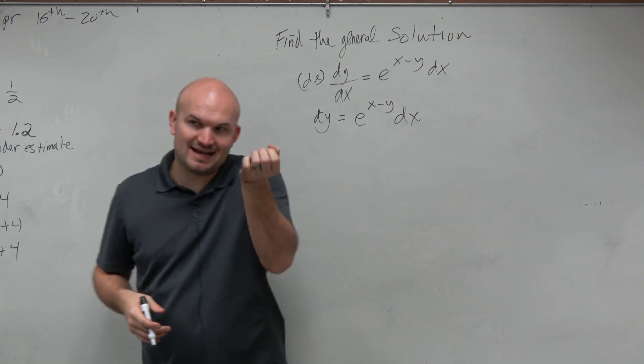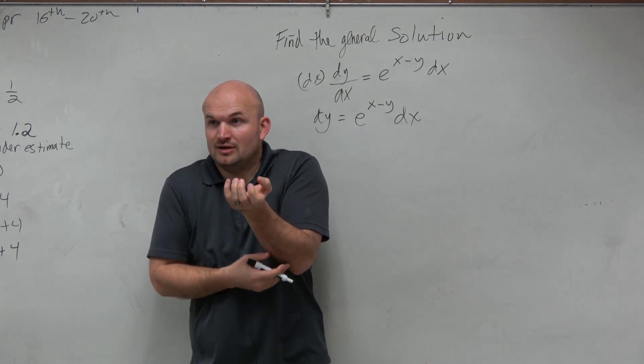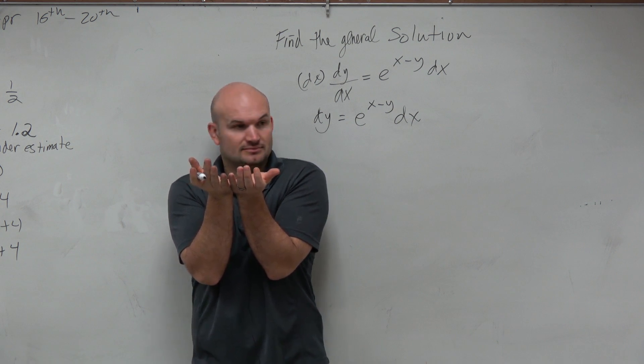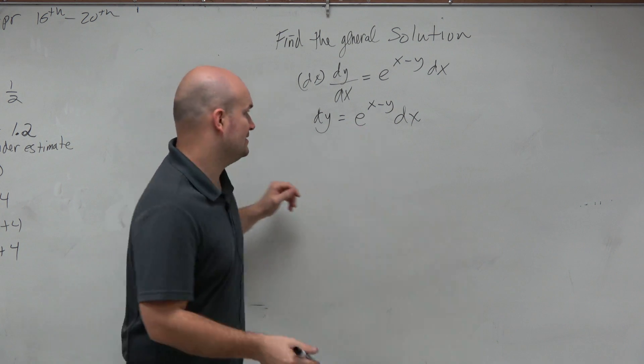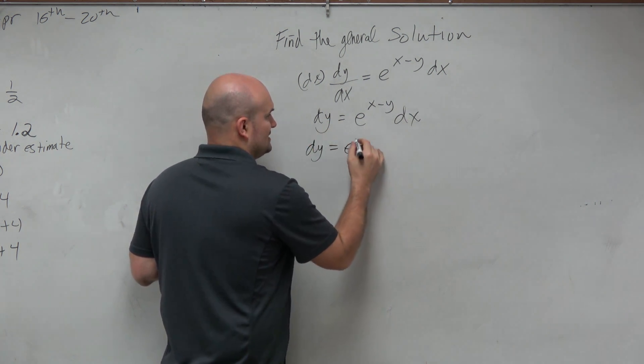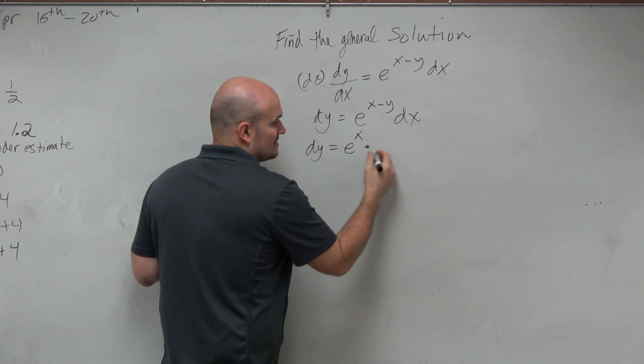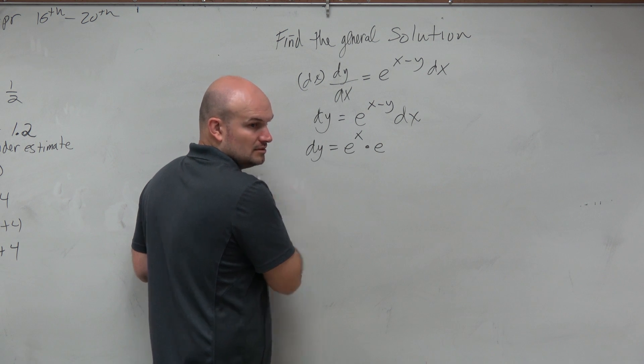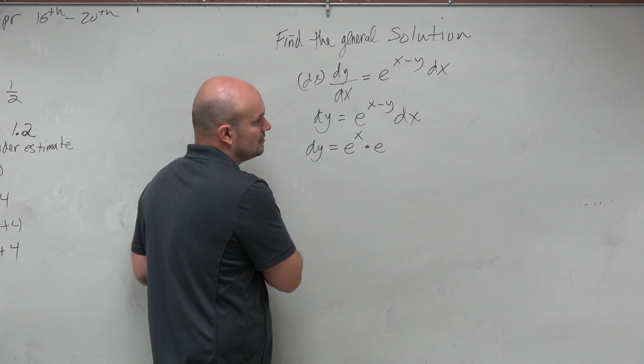But just remember, when you have that e, or really any power, you can always break that up using the power rule of exponents, right? Could we rewrite this as dy equals e^x times e to the... I thought it was over e to the y.